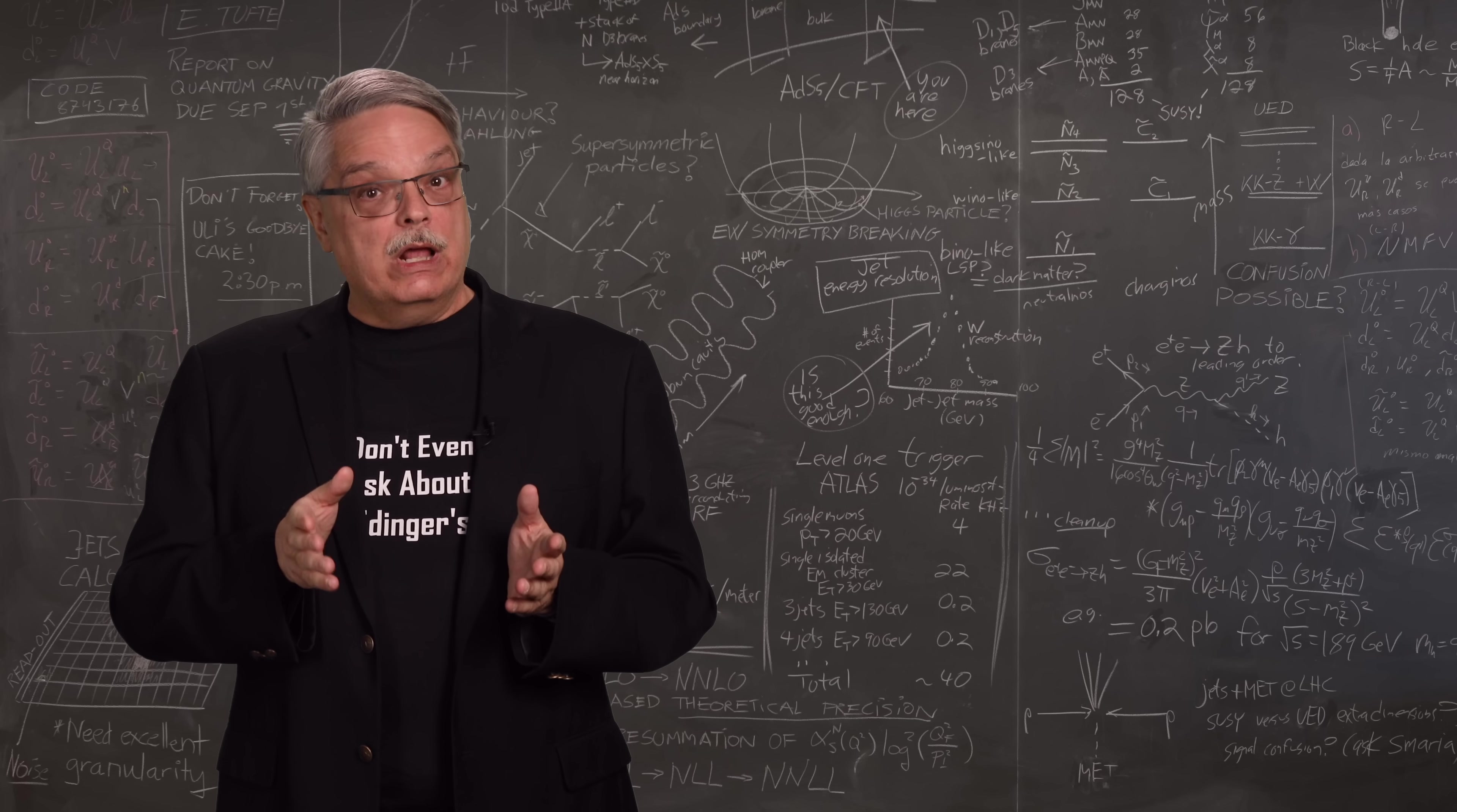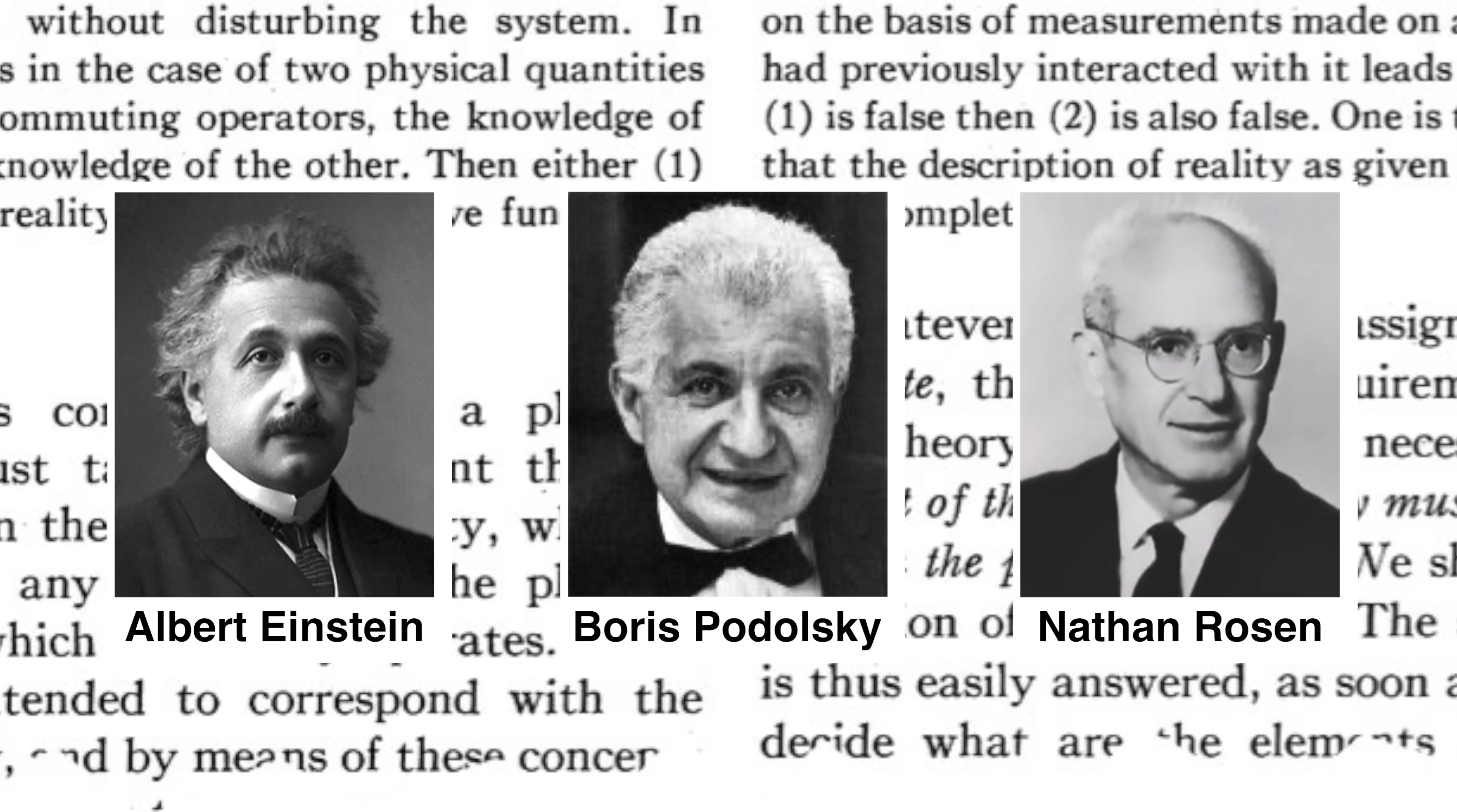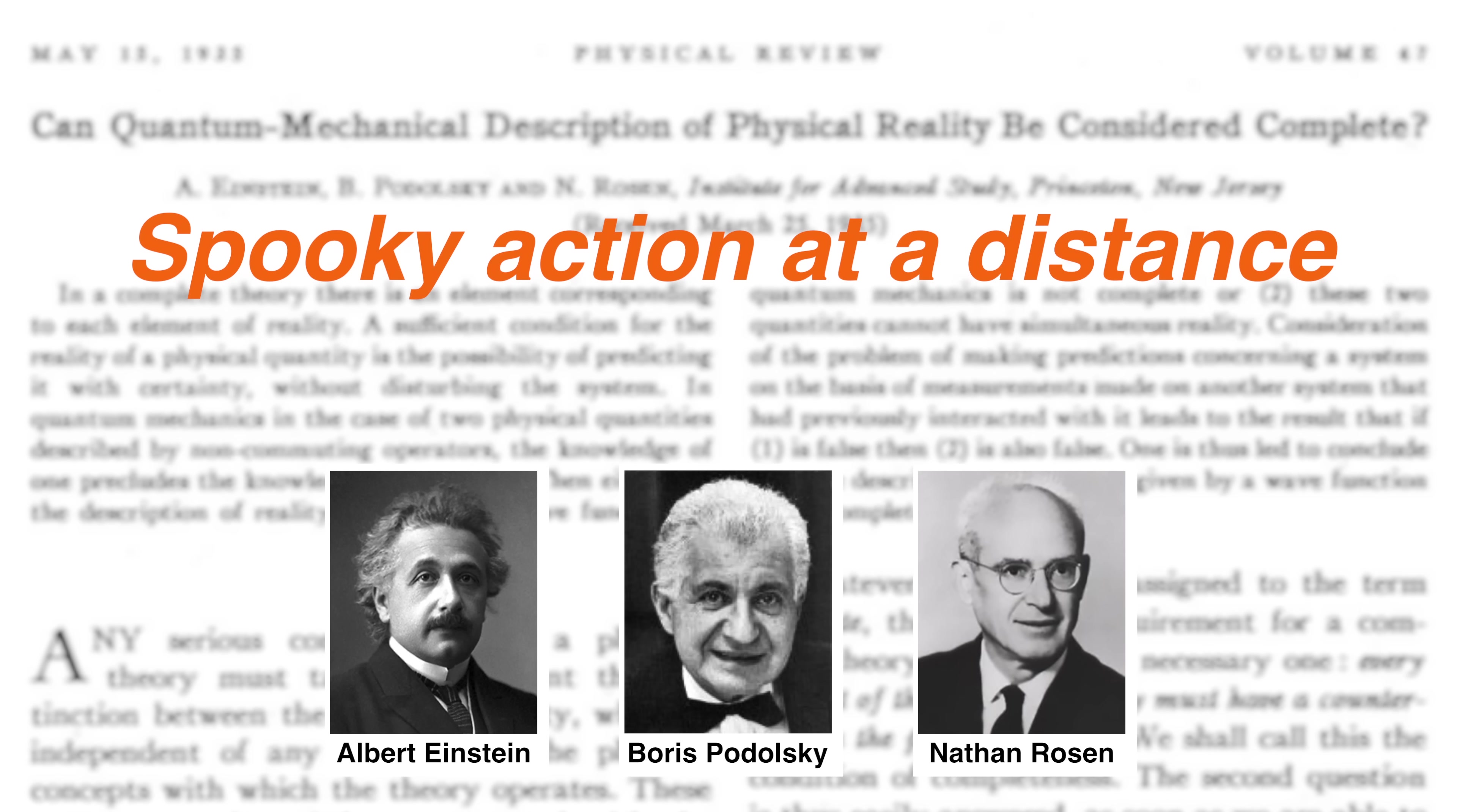That means that quantum information can travel faster than light. Yeah, you heard me right. Faster than light. That blew Einstein's mind, too. In fact, he co-authored a paper in 1935 with Boris Podolsky and Nathan Rosen that highlighted this problem. He also called this transfer of quantum information spooky action at a distance. This was one of many reasons why Einstein didn't like quantum mechanics.